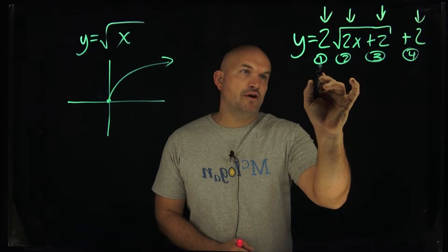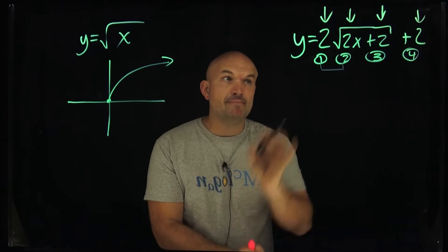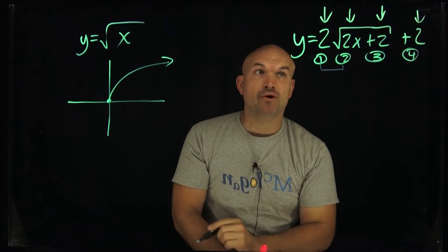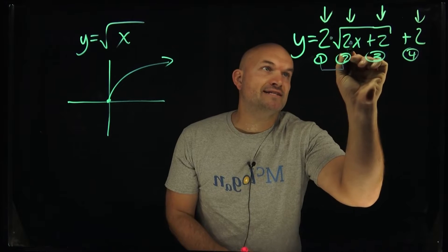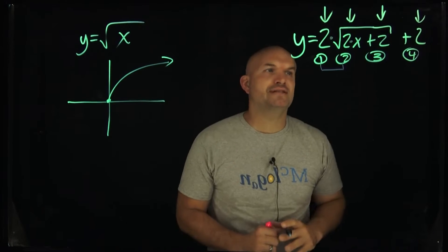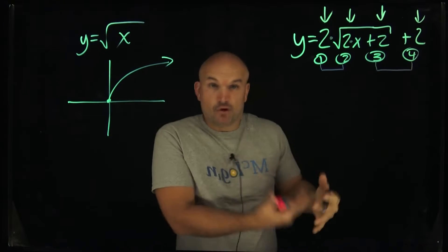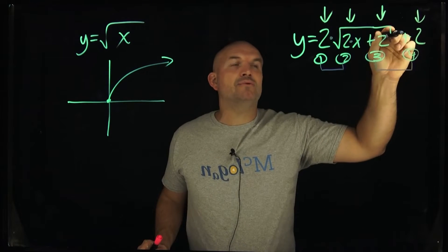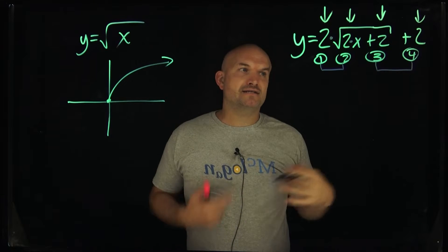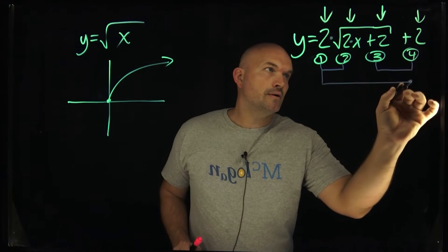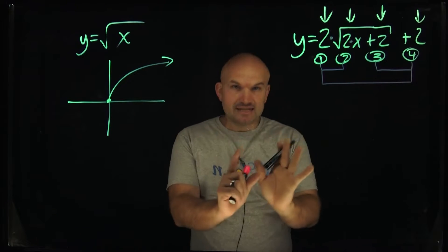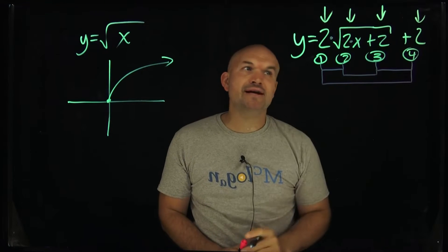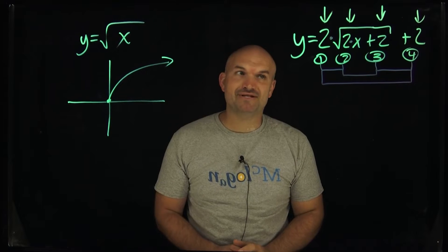Transformations 1 and 2 are both multiplying by 2, but notice the difference: one is outside and one is inside the square root. That is very important. They both have multiplication in common. Now for 3 and 4, what they have in common is they're both adding to the function. Their difference is that one is adding under the square root and the other is adding outside the square root. Also, 1 and 4 are both outside, while 2 and 3 are both under the square root.